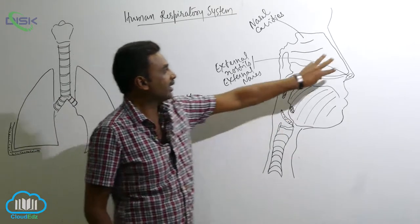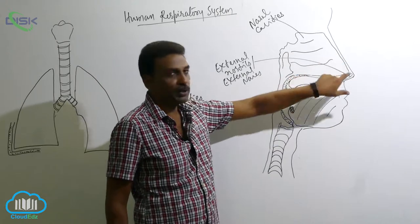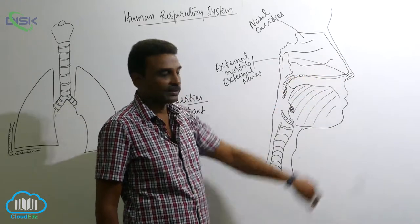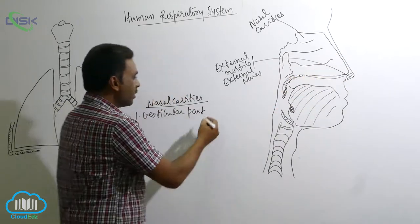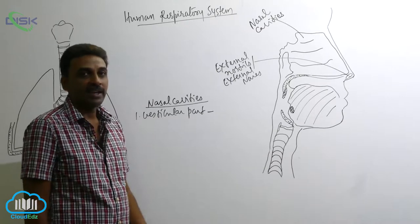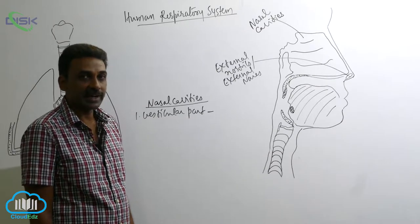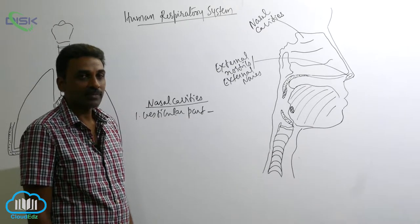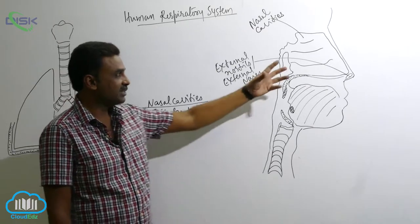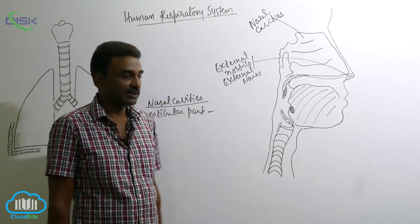At the beginning of the nasal cavity it is called the vestibular part. The vestibular part contains hair and sebaceous glands. The hair is useful for filtering dust particles.